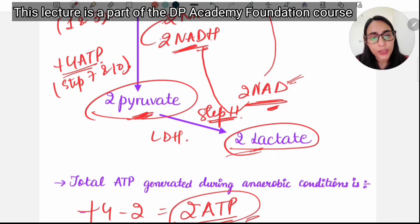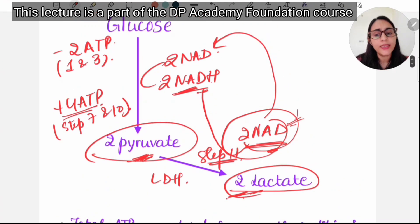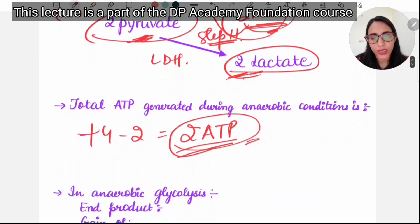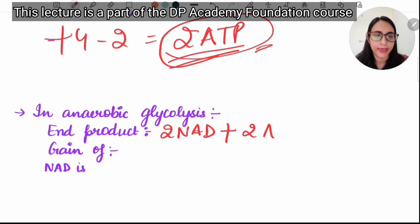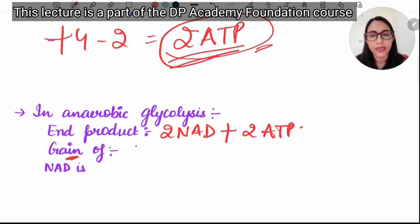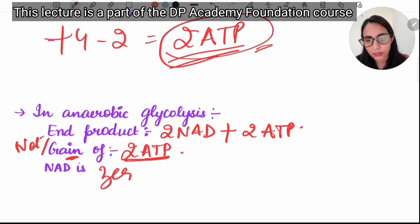The purpose of step 11 — conversion of pyruvate to lactate — is to regenerate NAD+ so it can be reused in the glycolysis pathway. In anaerobic glycolysis, the end products are 2 lactate and a net gain of 2 ATP. NADH net gain is 0, because the NADH produced is consumed in the lactate-forming step.